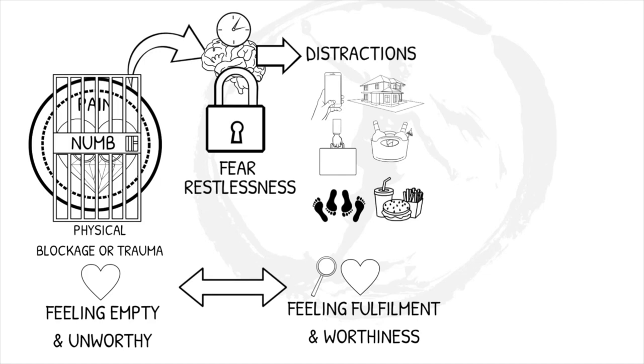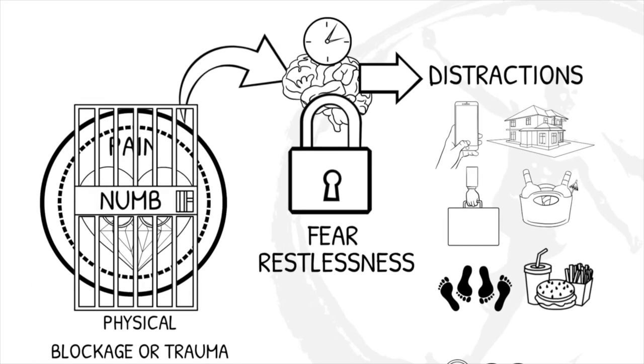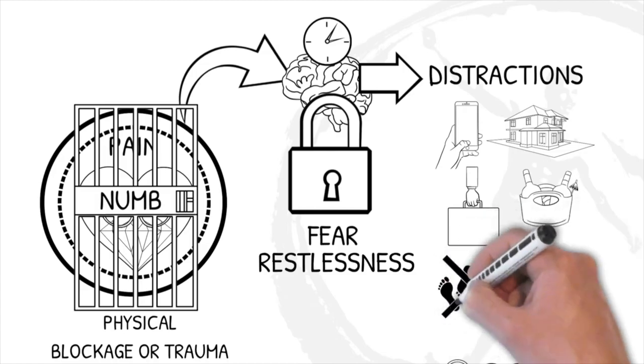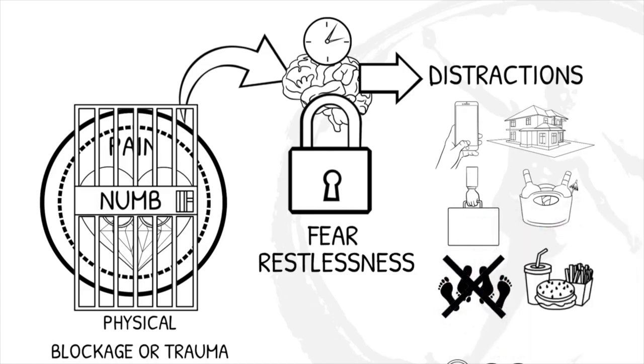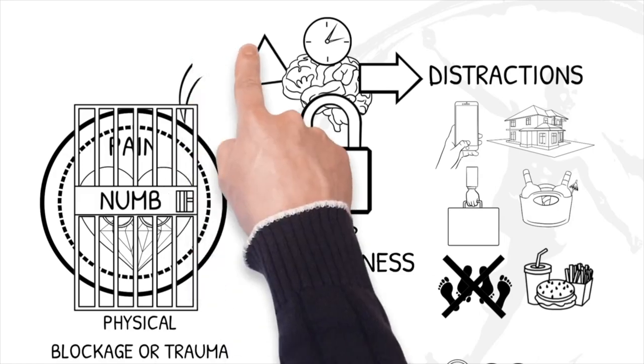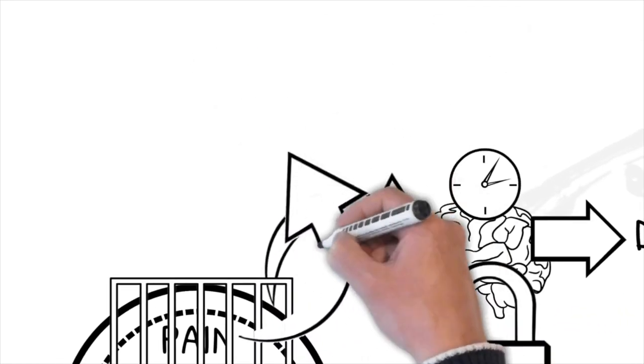And that is why each distraction, apart from the short shot of distraction it gives, doesn't keep working and falls apart. When our distractions don't work anymore, or our control falls away, unsolved pain breaks through our wall of protection.